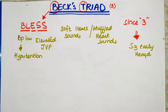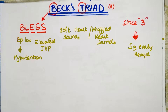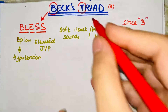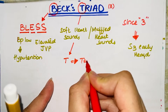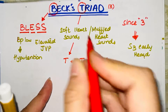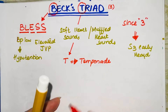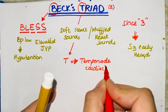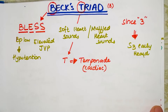Now the thing that should come to your mind is: we've learned what Beck's triad consists of, but we should know in which disease it occurs, or if we have diagnosed Beck's triad in a patient, what we will suspect. The T in the mnemonic stands for tamponade — so Beck's triad is an indication of cardiac tamponade.